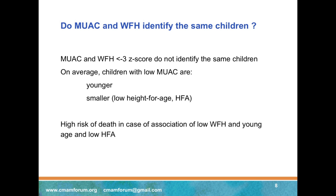To understand the better capacity of MUAC to assess the risk of dying compared to weight-for-height, it is important to realize that MUAC and weight-for-height do not identify the same children. On average, children with a low MUAC are younger and also smaller — that is, they have a lower height-for-age and are more stunted than children with just a low weight-for-height. This may explain the association between low MUAC and high risk of death, because younger children have a higher risk of dying to start with, and the association between wasting and stunting is especially dangerous in young children.